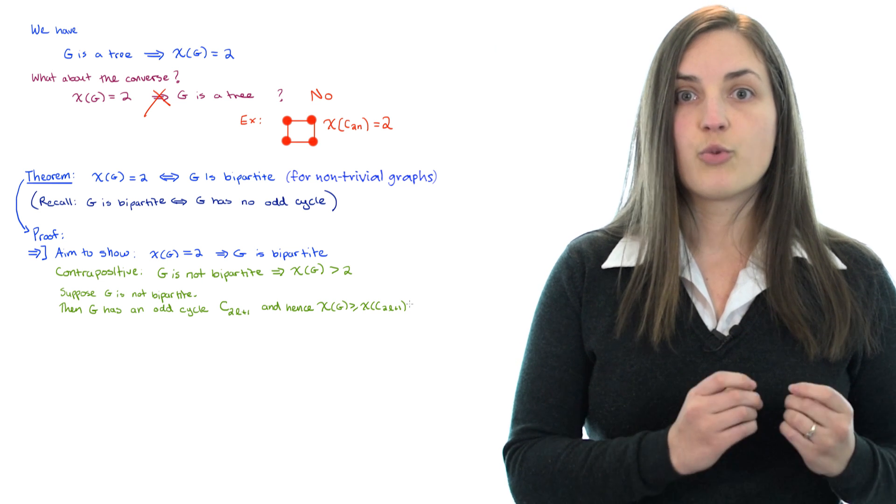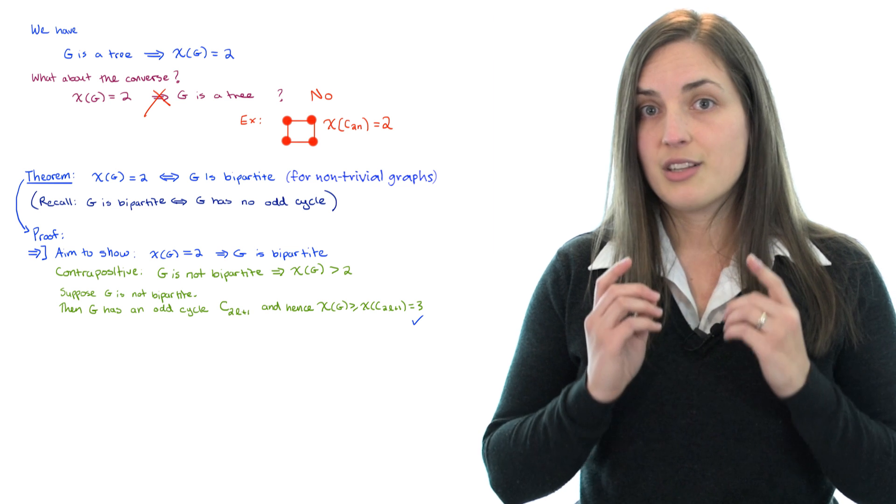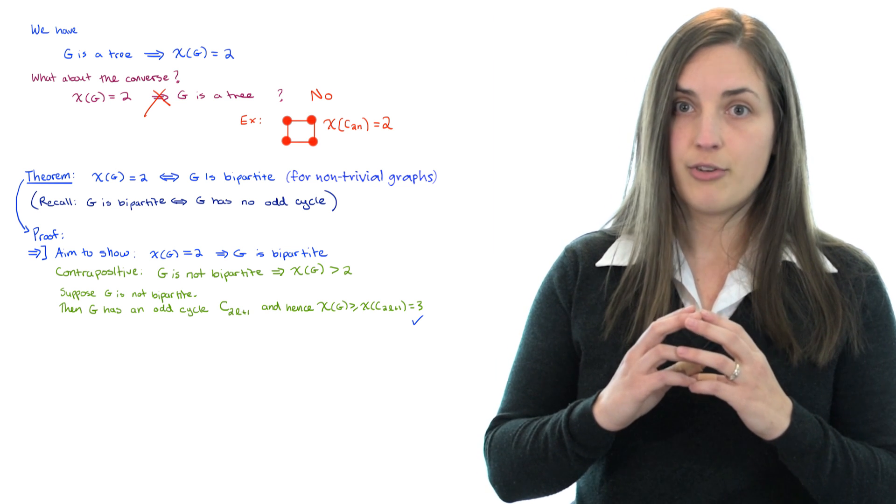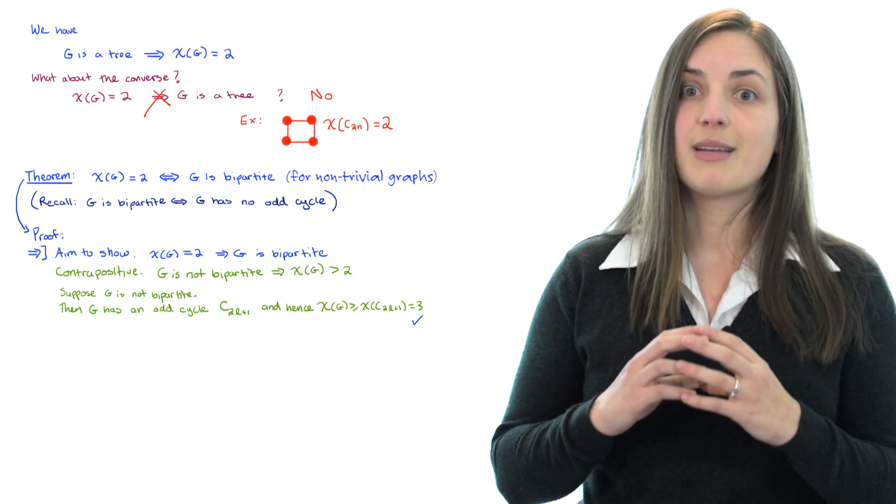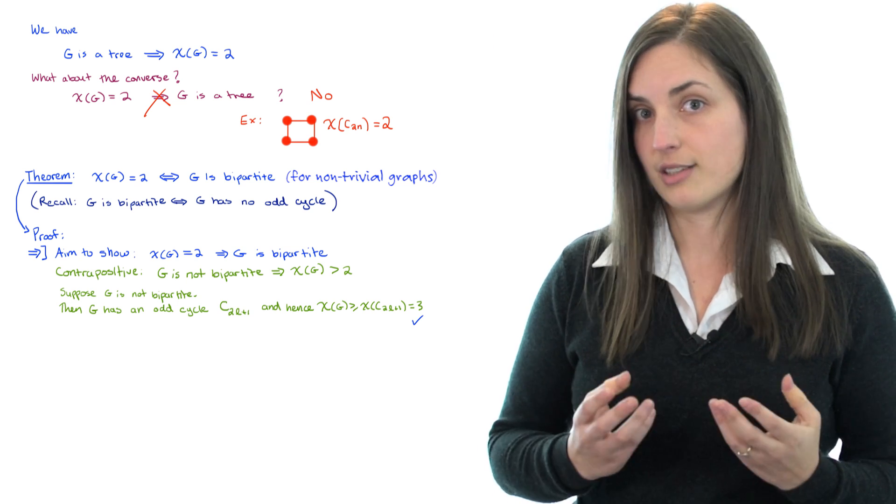Now the chromatic number of G is going to be at least as big as the chromatic number of that odd cycle, which we know is equal to 3. This is because we're using the fact that if you have a subgraph, then the chromatic number of your whole graph must be at least as big as the chromatic number of the subgraph. In this case, the subgraph is the odd cycle.